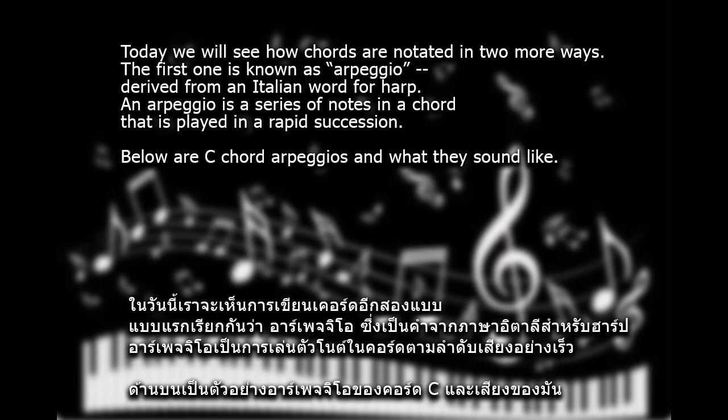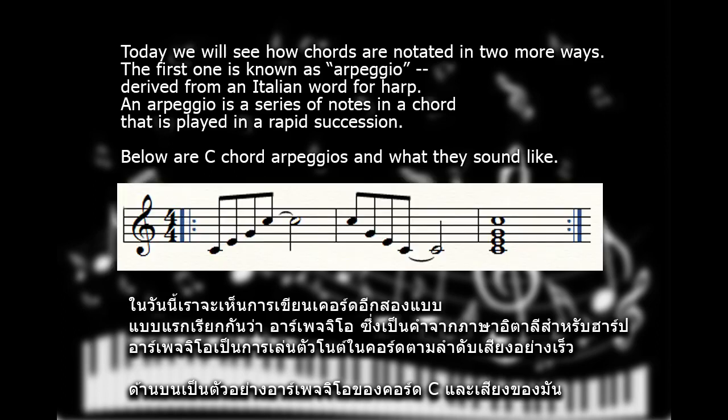Today we will see how chords are notated in two more ways. The first one is known as arpeggio, derived from an Italian word for harp. An arpeggio is a series of notes in a chord that is played in rapid succession. Below are C chord arpeggios and what they sound like.